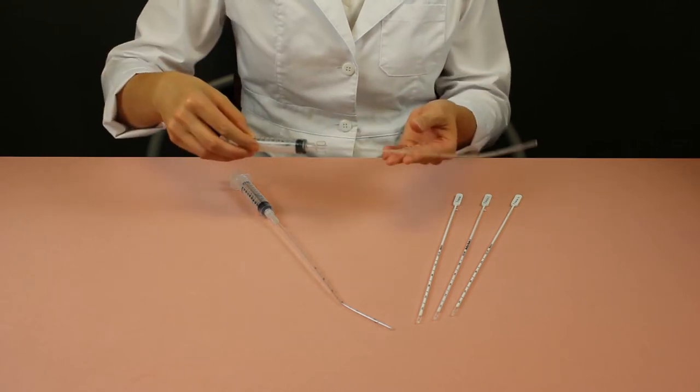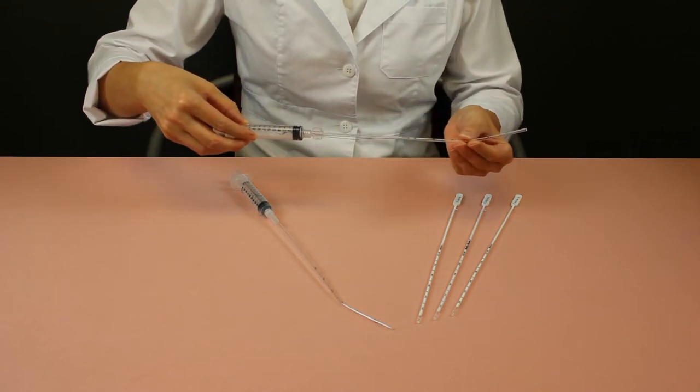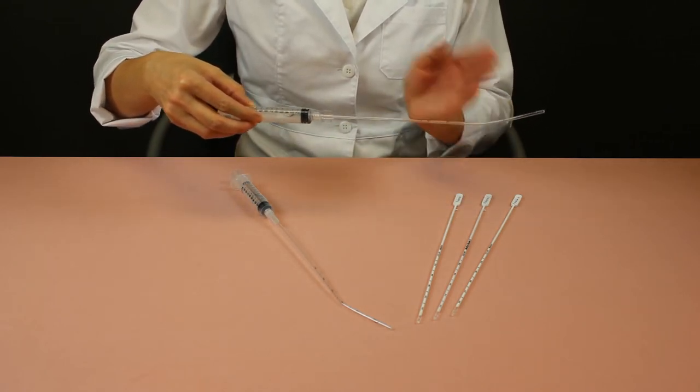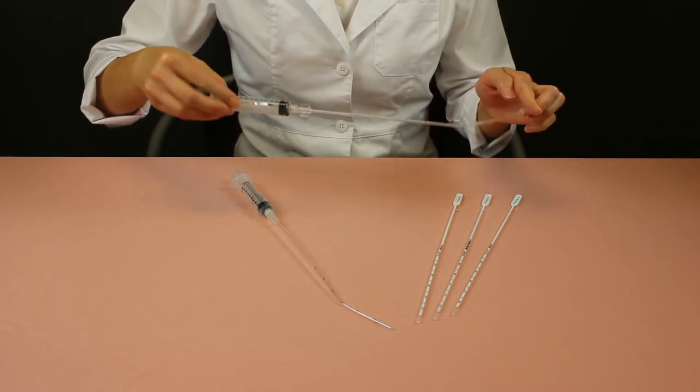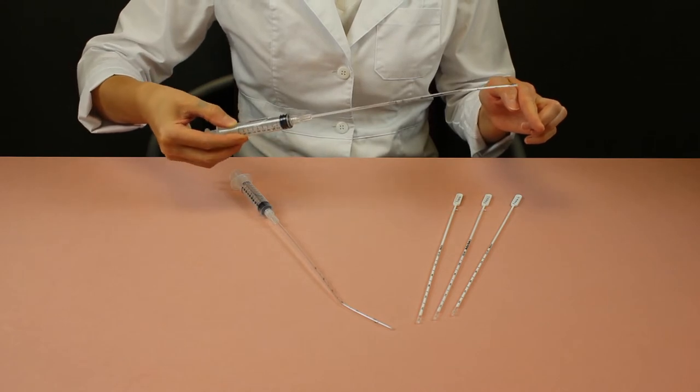At its core, the device is a 3mm semi-rigid curette attached to a 10cc syringe. The hole in the curette has a cutting edge that collects a better sample of live endometrium.